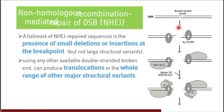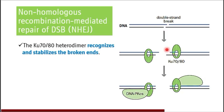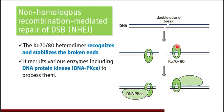These small deletions and insertions can lead to translocations or a whole range of other major structural variants. Coming to the mechanism of NHEJ: there is a role of a heterodimer protein known as Ku70/80, which recognizes and stabilizes the broken ends. It will attach to those ends, stabilize them, and then recruit various other enzymes including DNA protein kinases, which combine with Ku70/80 to process the DNA repair mechanism.